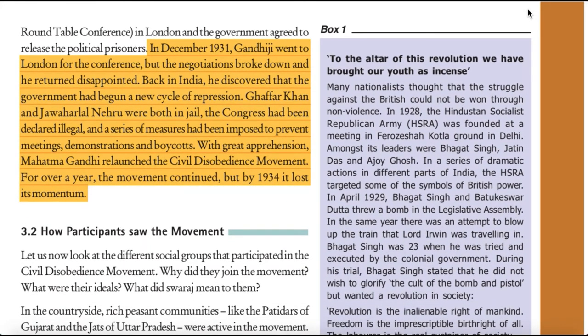By the Gandhi-Irwin Pact, Gandhiji consented to participate in a round table conference, and the government agreed to release the political prisoners. In December 1931, Gandhiji went to London for the conference but the negotiations broke down and he returned disappointed. Back in India, he discovered that the government had begun a new cycle of repression — Ghaffar Khan and Jawaharlal Nehru were both in jail, the Congress had been declared illegal, and measures had been imposed to prevent meetings, demonstrations and boycotts. With great apprehension, Mahatma Gandhi relaunched the civil disobedience movement. For over a year the movement continued, but by 1934 it lost its momentum.